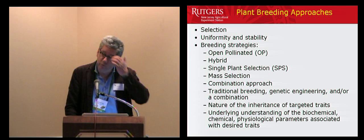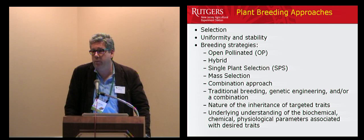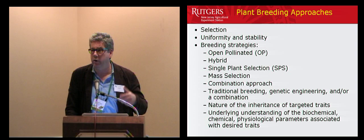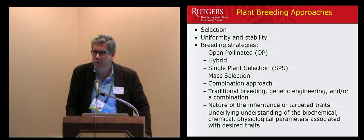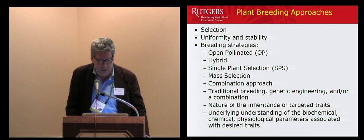We know we can make tremendous progress using open pollinated varieties. We know now that basil, despite going through many many generations, produces beautiful inbred lines without inbreeding depression, and yet when you recross them, you get the characteristic heterosis we like for hybrids. We could do this through single plant selection, which is what we're doing, or a combination approach including mass selection.